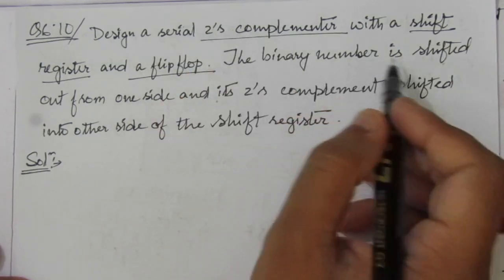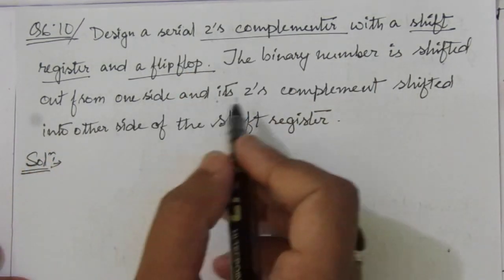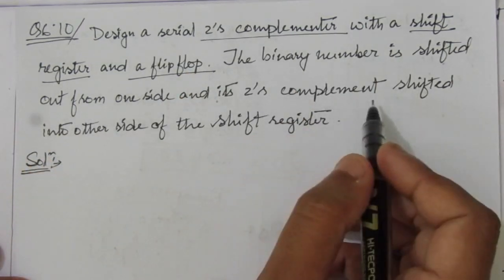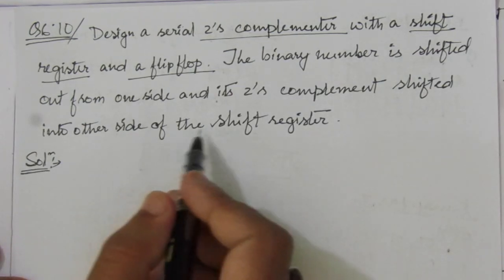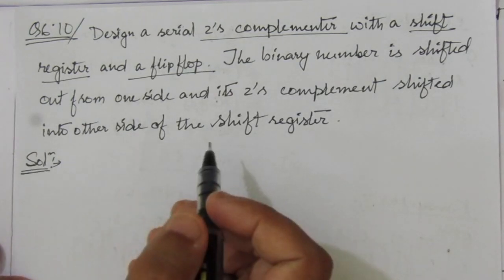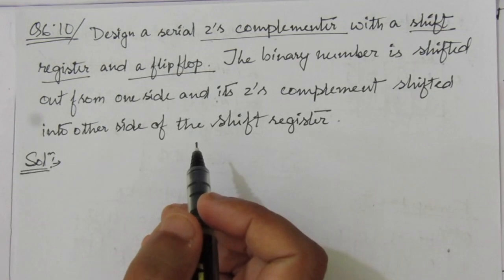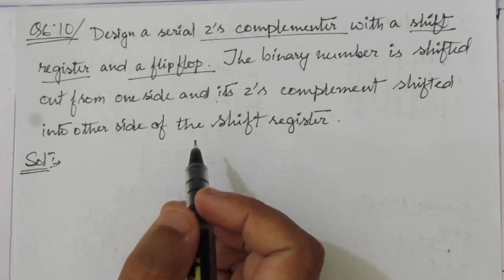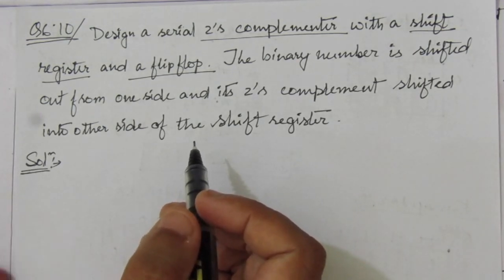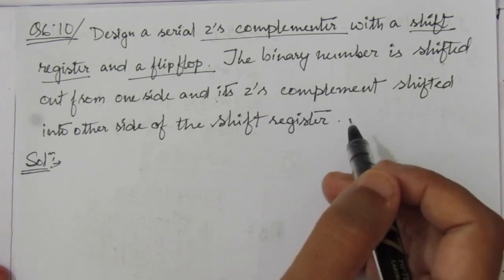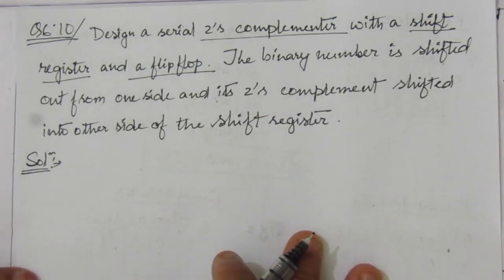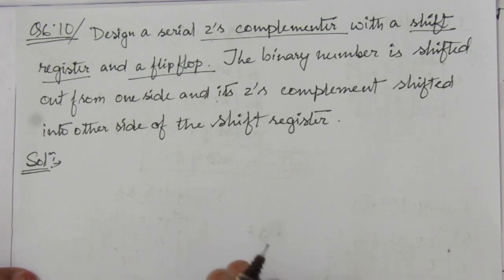That means we have to use one shift register and one flip-flop for designing a two's complementer circuit. The binary number is shifted out from one side and its two's complement is shifted into the other side of the shift register. From one side of the shift register the binary number is taken out, and from the other side we feed the two's complement back into the register.